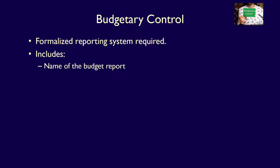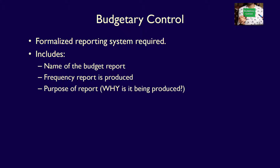In order to work properly, budgetary controls require a formalized reporting system. This includes the naming of the basis for the budget report — for example, a sales budget report — how frequently the budgetary report will be produced (daily, weekly, monthly, quarterly, or annually), what the purpose of the budget report is, such as determining if sales goals are being met, and also who will receive the report for review and follow-up, such as the sales manager.